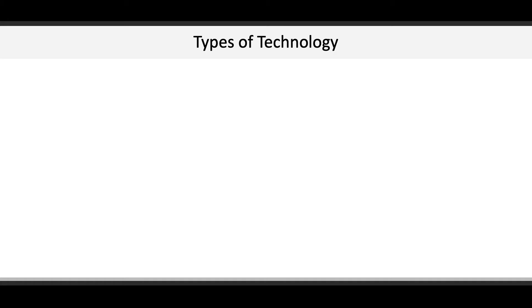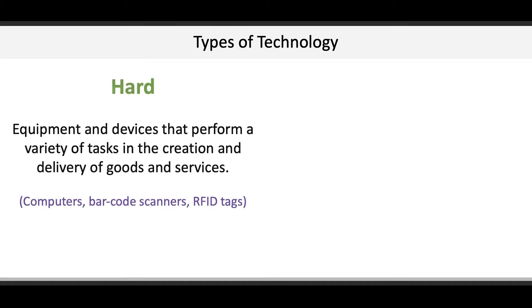Hard technology includes equipment and devices that perform a variety of tasks in the creation and delivery of goods and services. Examples here include computers, barcode scanners, and RFID tags.